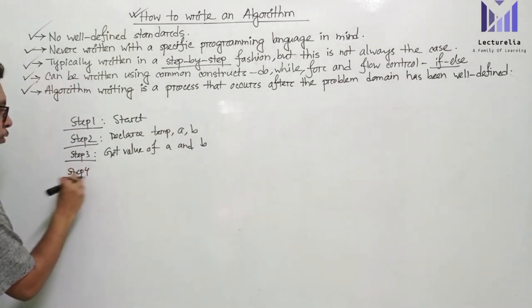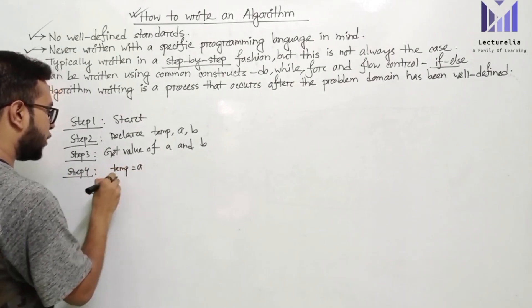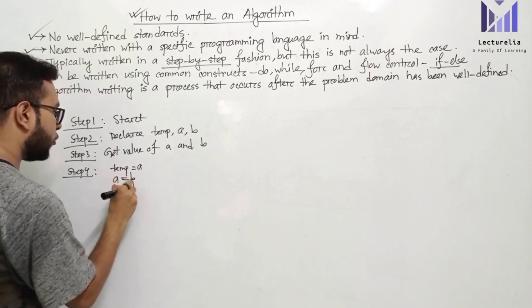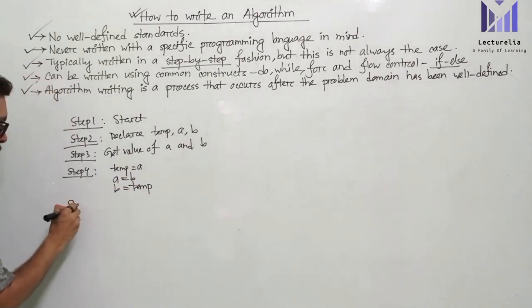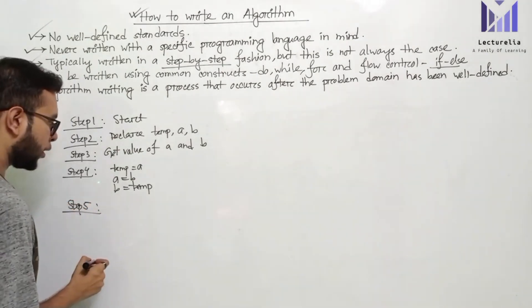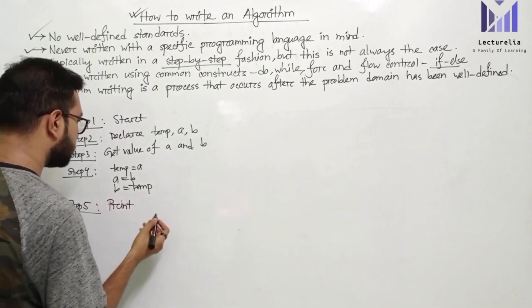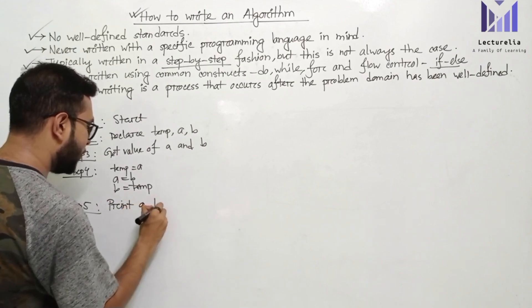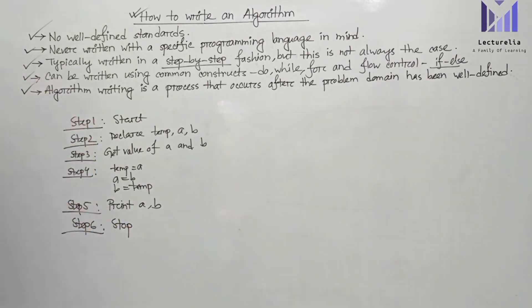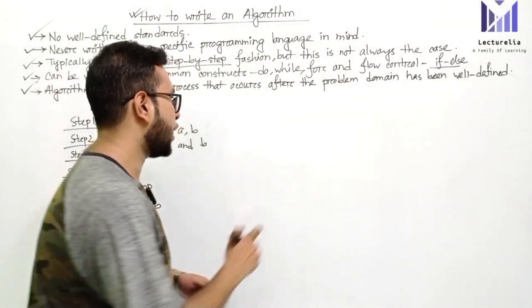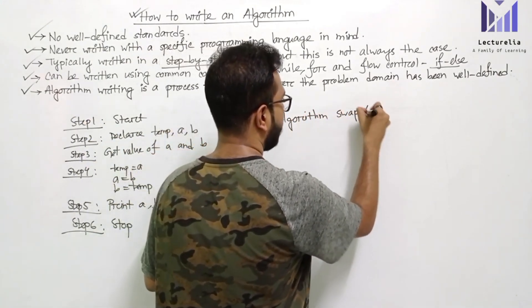Another example: how to swap two variables. Here we have rows — number 4 rows and another row. Step 4, step 5 rows — we print a and b. Step 6 is Stop. This is written in a step-by-step fashion. The algorithm is to swap variables a and b.